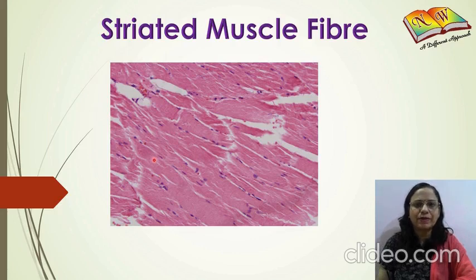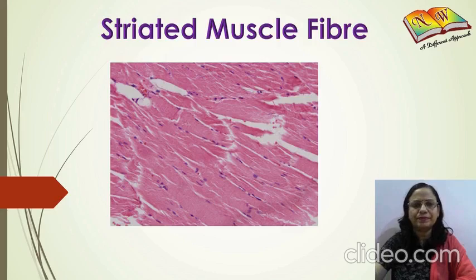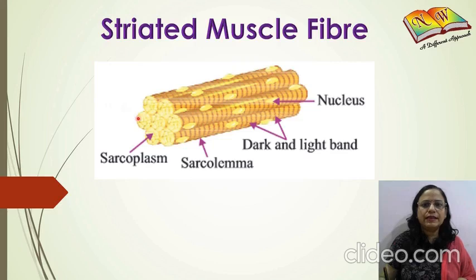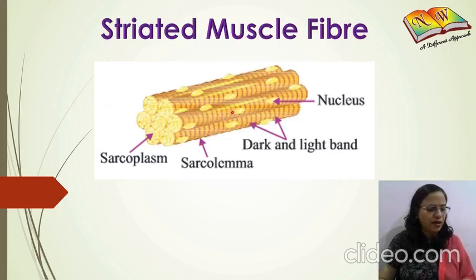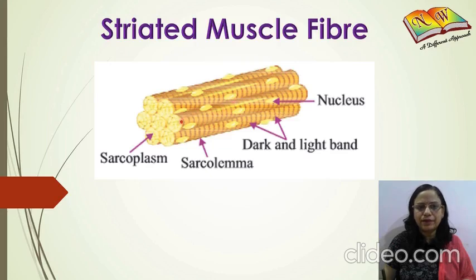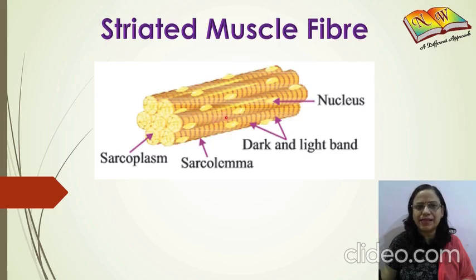When you see the slide of a striated muscle fiber under the microscope, you will see something like this. These muscle fibers are long, cylindrical, non-tapering, and unbranched — as you can see in this image, there is no branching. They are cylindrical in nature with the presence of striations all over. Striations are the bands — the yellow and brown bands visible in this diagram — and that is why these muscles are called striated muscles.